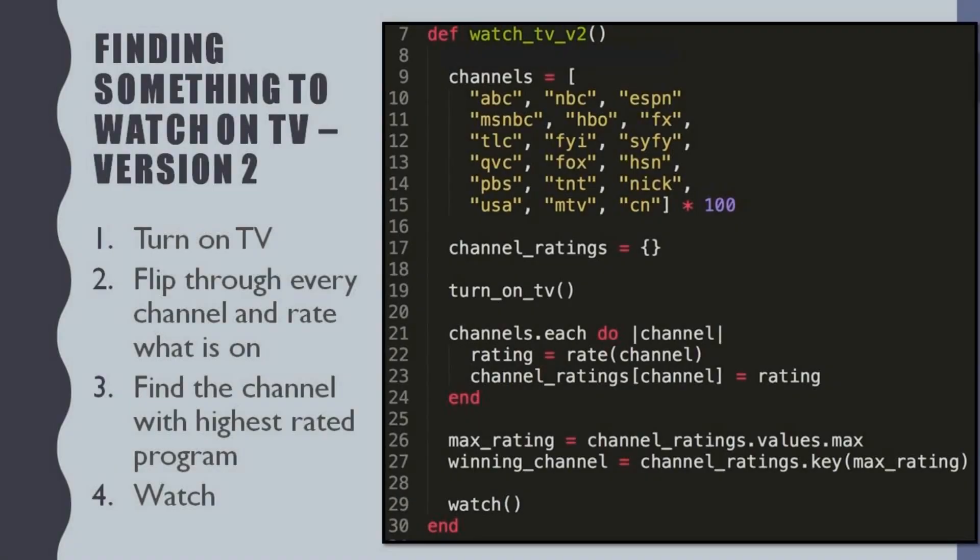Let's look at another solution. The first step is turn on the TV. The second step is flip through every channel and rate what is on. The third step is find the channel with the highest rated program. And the fourth step is watch that program. Let's write it down in a procedure. Define watch TV version 2.